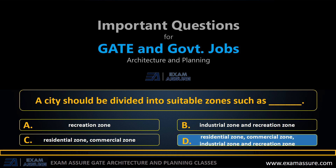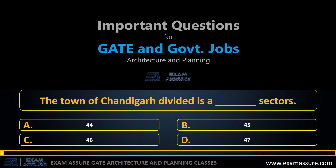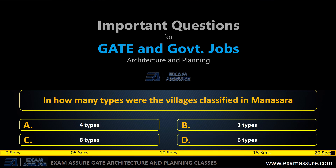Next question. The town of Chandigarh is divided into — Option A: 44 sectors. Option B: 45 sectors. Option C: 46 sectors. Option D: 47 sectors. The correct answer is: 47 sectors.